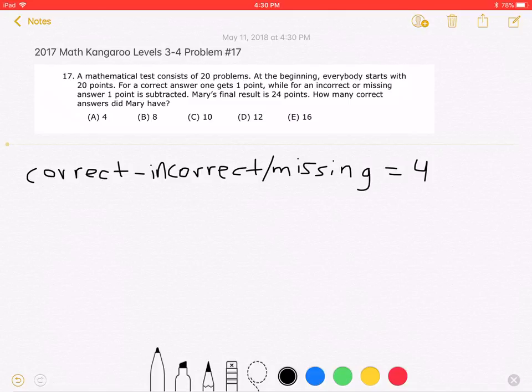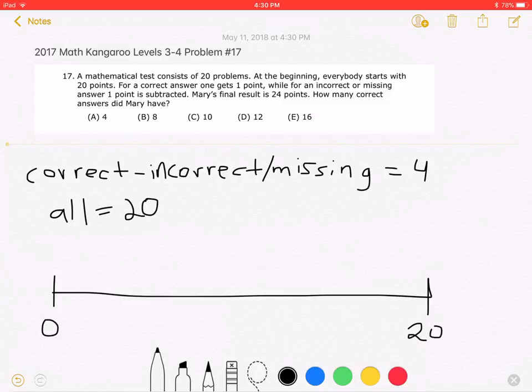Now, we know that in total there are 20 problems. Let's draw a little number line. So let's say it goes from 0 to 20. That's how many problems there are. So in the middle, we have 10. So if we split it in half, she would have 10 correct answers and 10 incorrect answers.